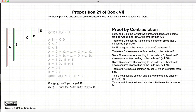Therefore, we have shown that a and b are the smallest two numbers that can be used to represent the ratio of a to b, and there are no other smaller numbers that can represent the same ratio.